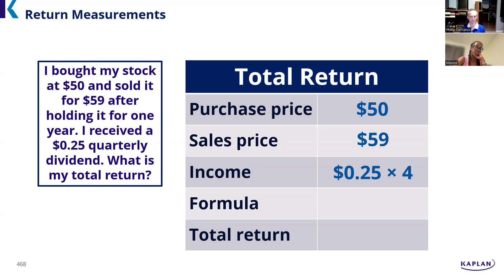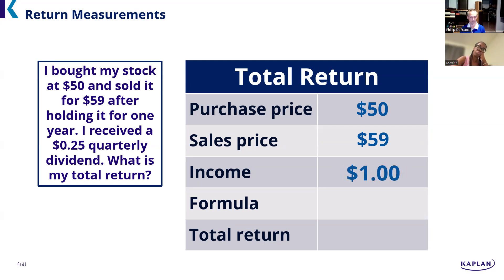So the formula is: what I made from price appreciation — plus or minus, though here it's a plus — plus the income stream. We made a total of $1 in income and $9 in price appreciation, so we made $10. To make that $10, we spent $50.